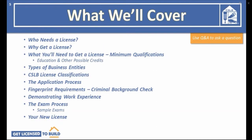Here's a list of what we're going to cover today. We will take you through the process of applying for your California contractor's license: who needs a license, why get a contractor's license, minimum qualifications and credits, types of business entities, CSLB license classifications including our new B2 Residential Remodeling classification, tips on filling out your application, fingerprint requirements for a criminal background check, how to get ready for your exams, and the other things you'll need before your license is issued, like bond and insurance.